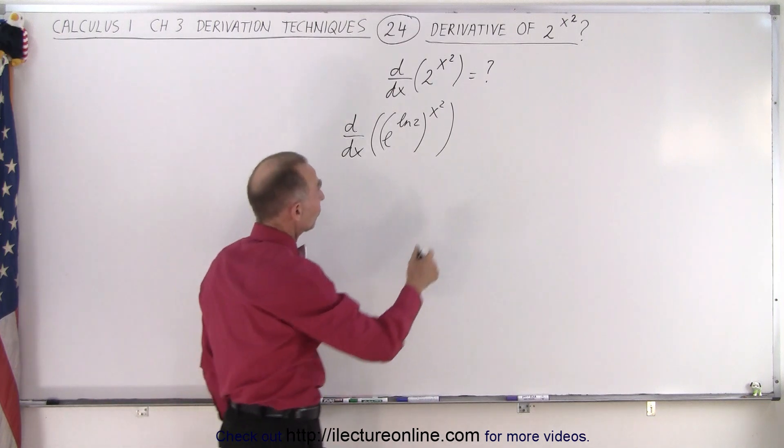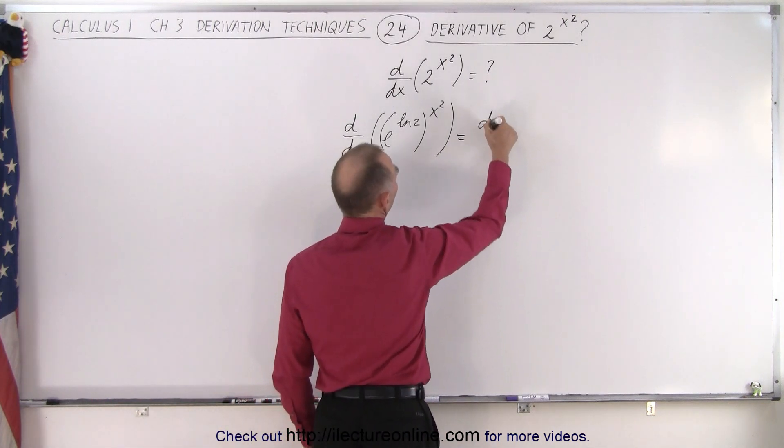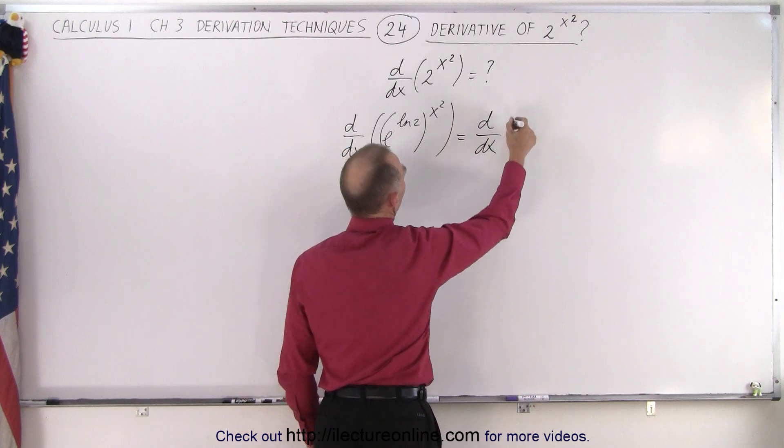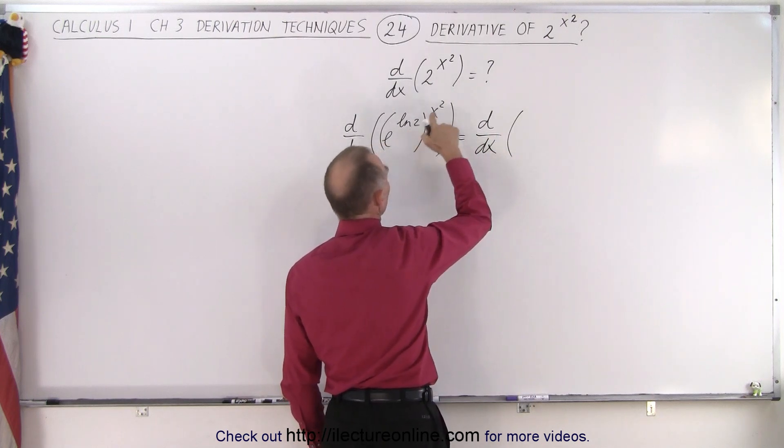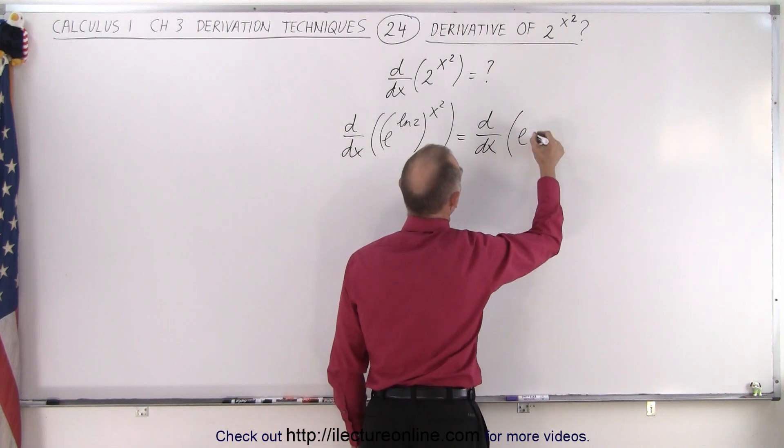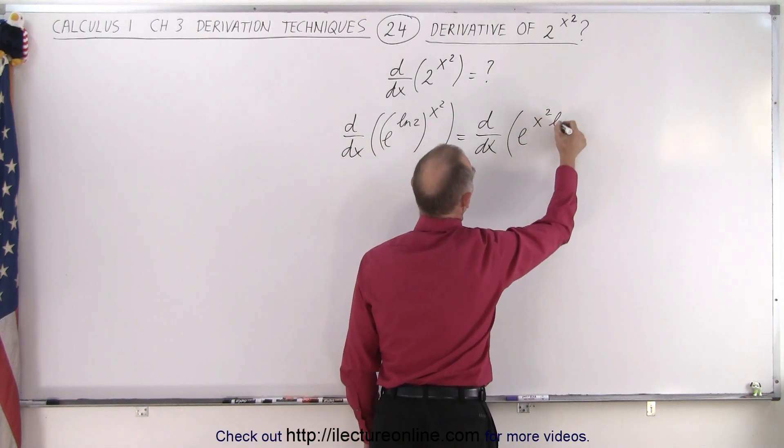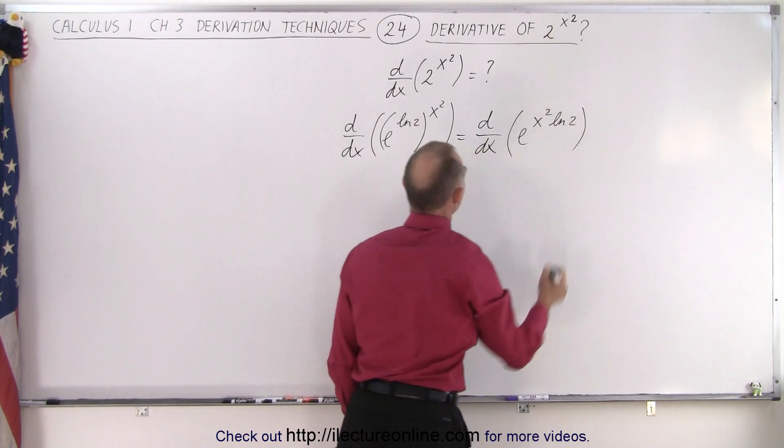Once we've written it like this, we can now write this as the derivative with respect to x. Here we have an exponent raised to an exponent, so we multiply them. This becomes e to the x squared times the natural log of 2.